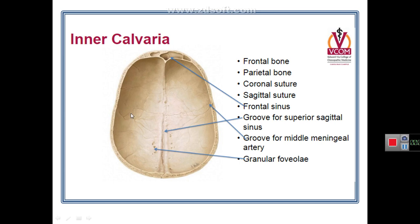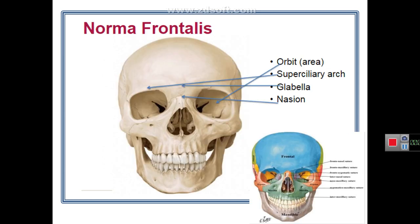The inside of the calvaria also shows markings of the middle meningeal artery, which produces markings on the inner surface of the skull. This is all about the norma verticalis.